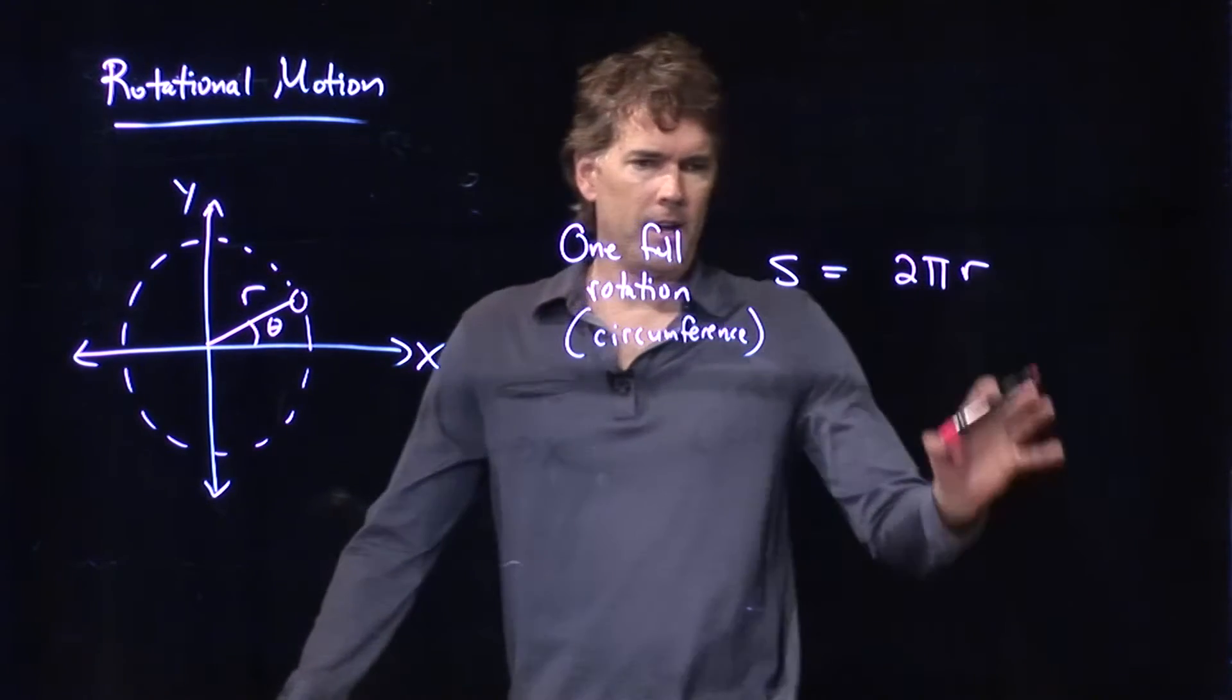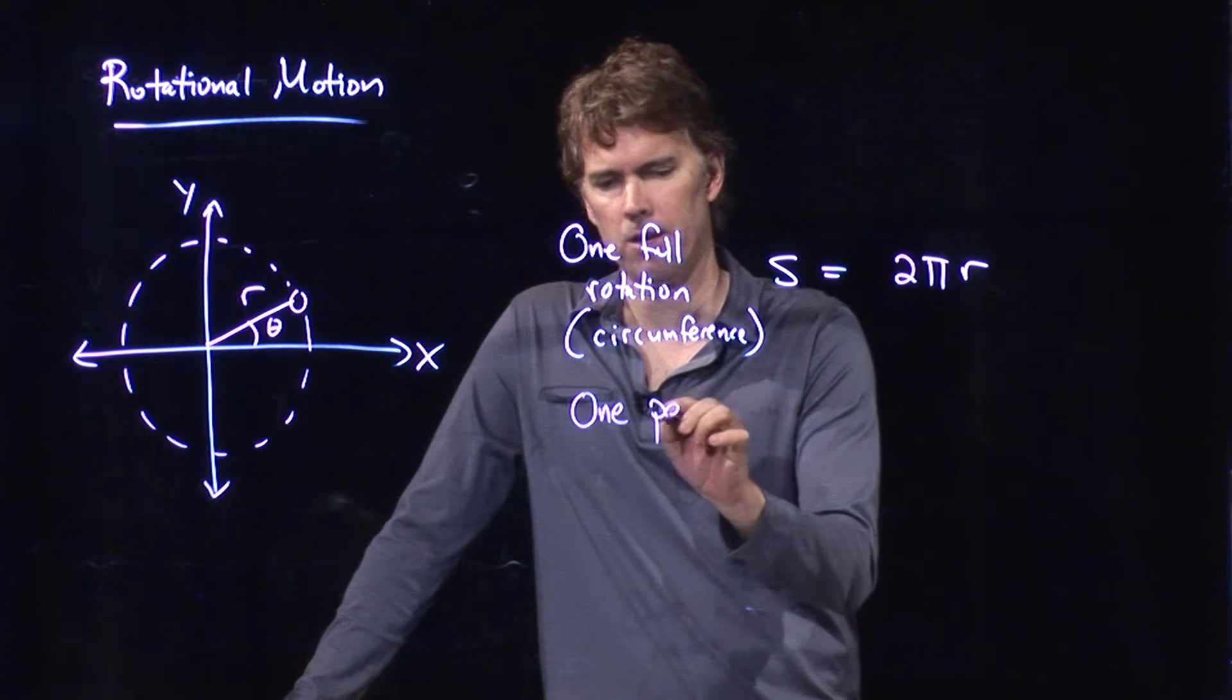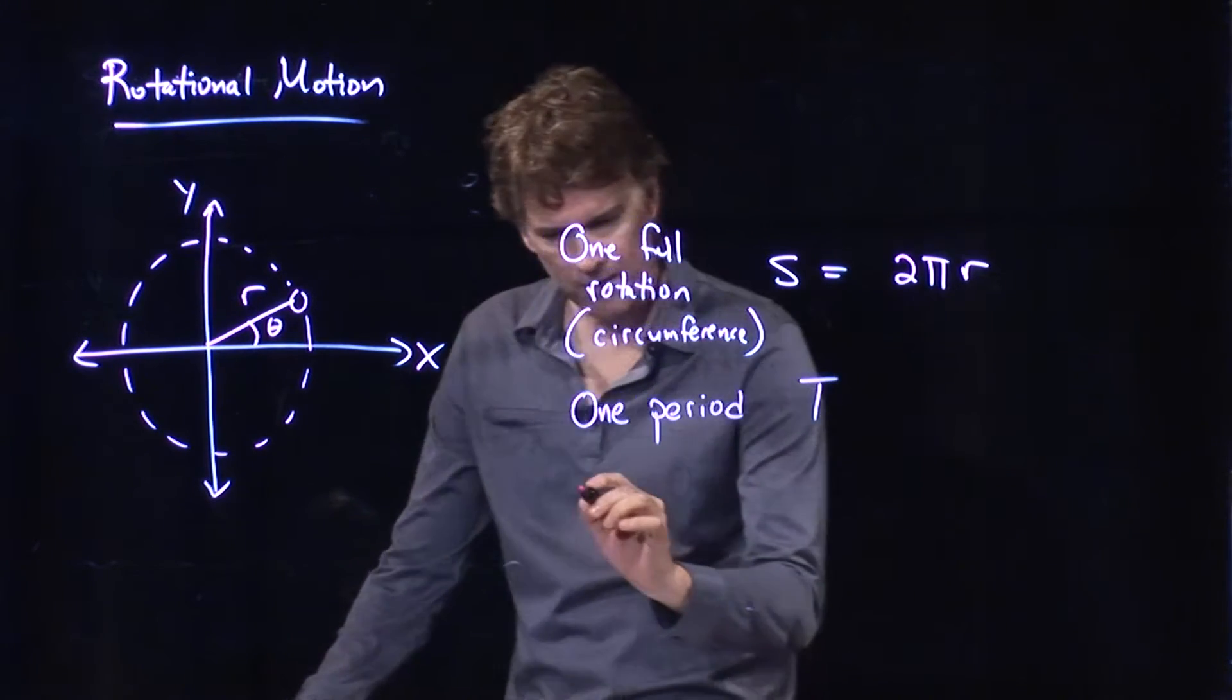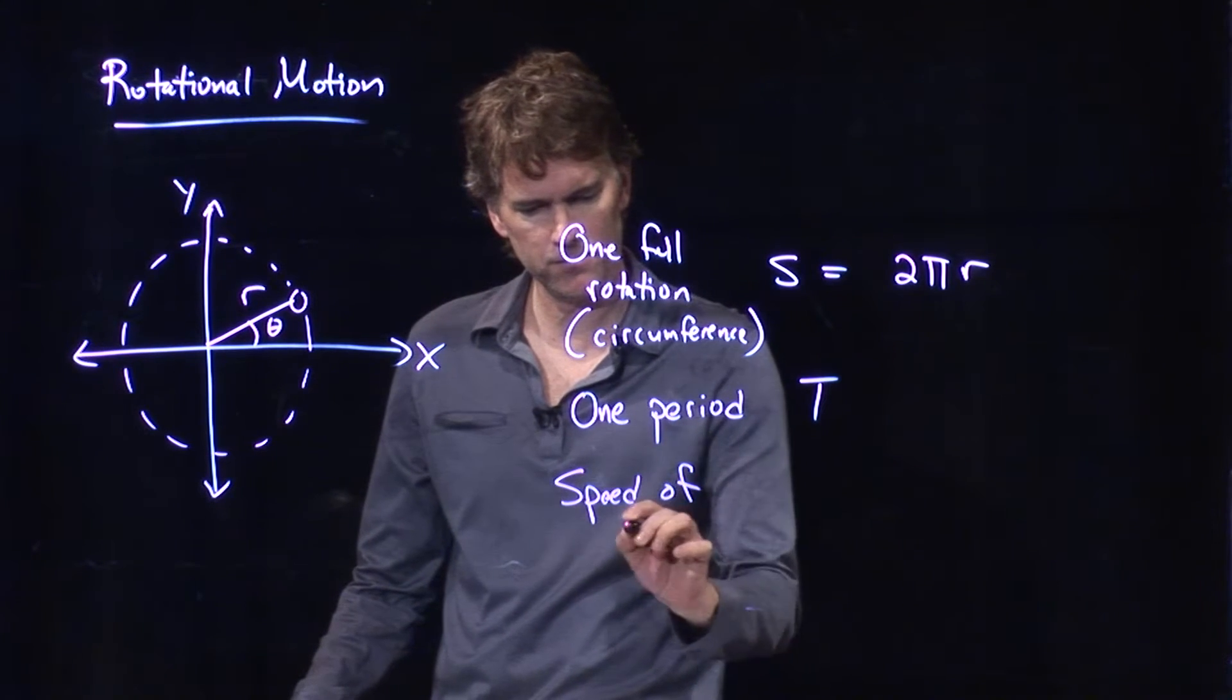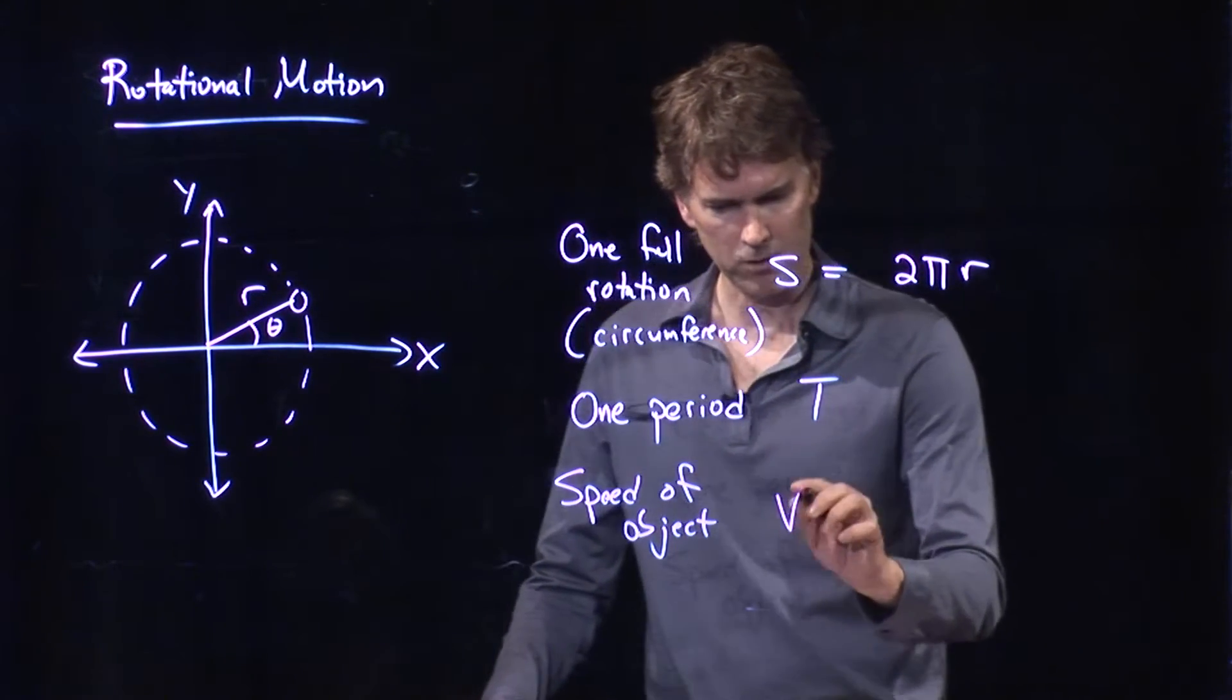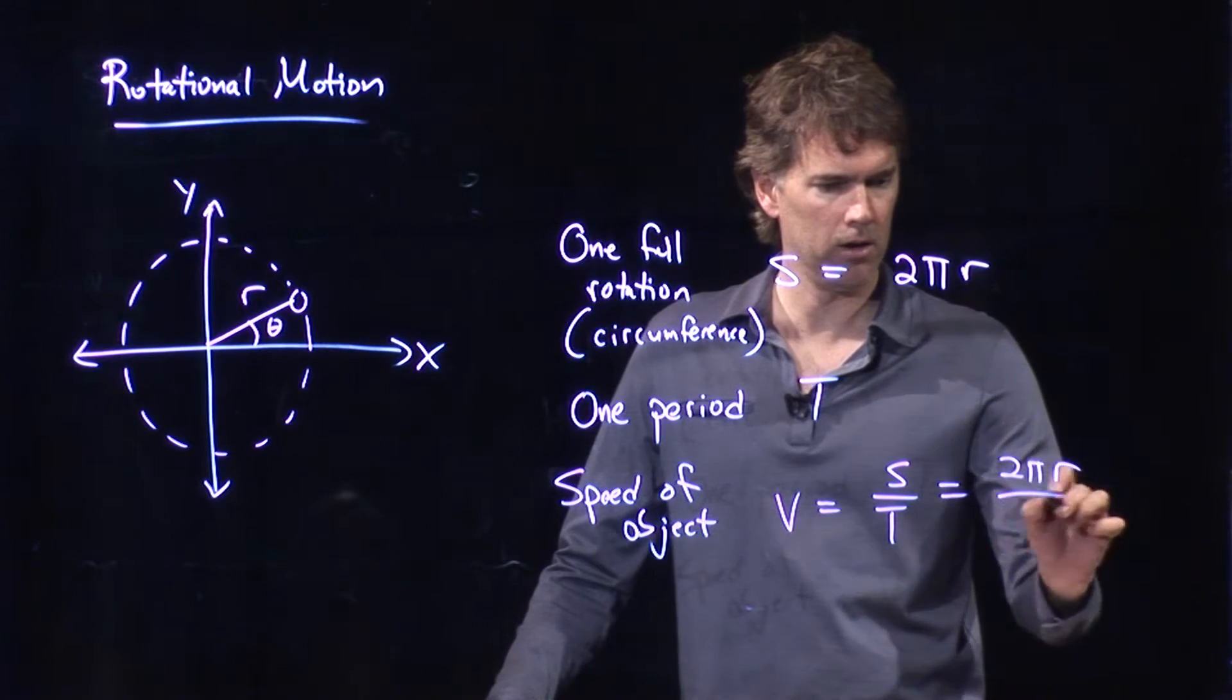So if I do one full rotation and I do it in one period T, some measurement in time, then what can I say about the speed of that object? Well, speed is just distance over time, and so we can say it's s over t, which is 2πr over T.